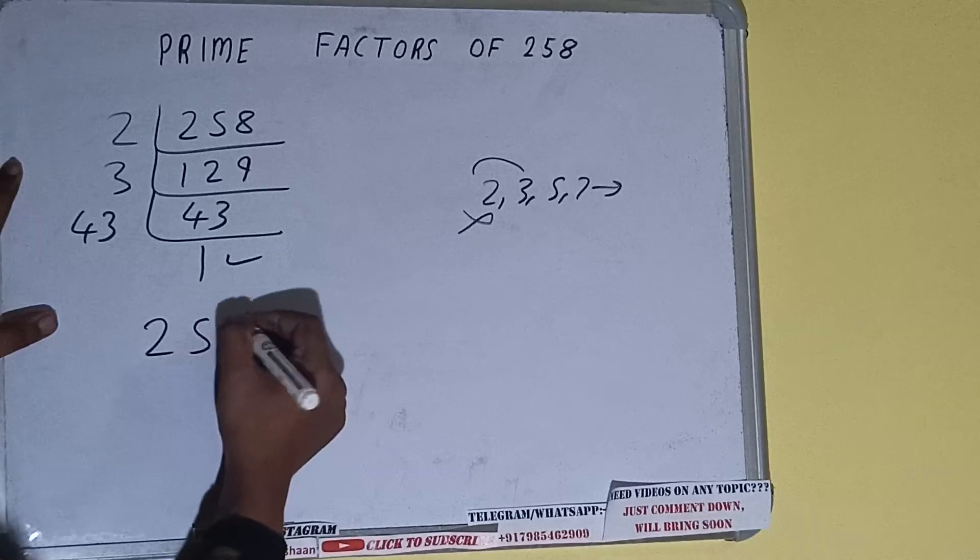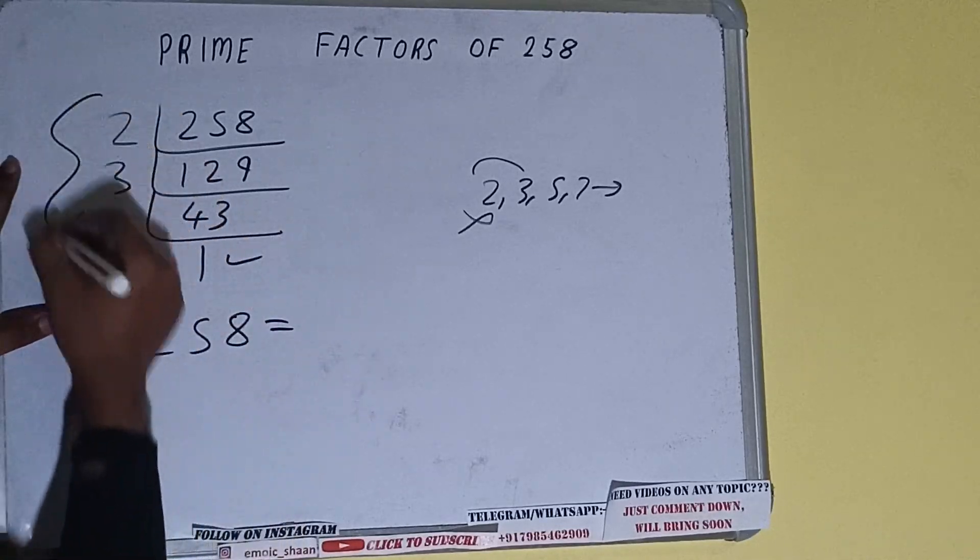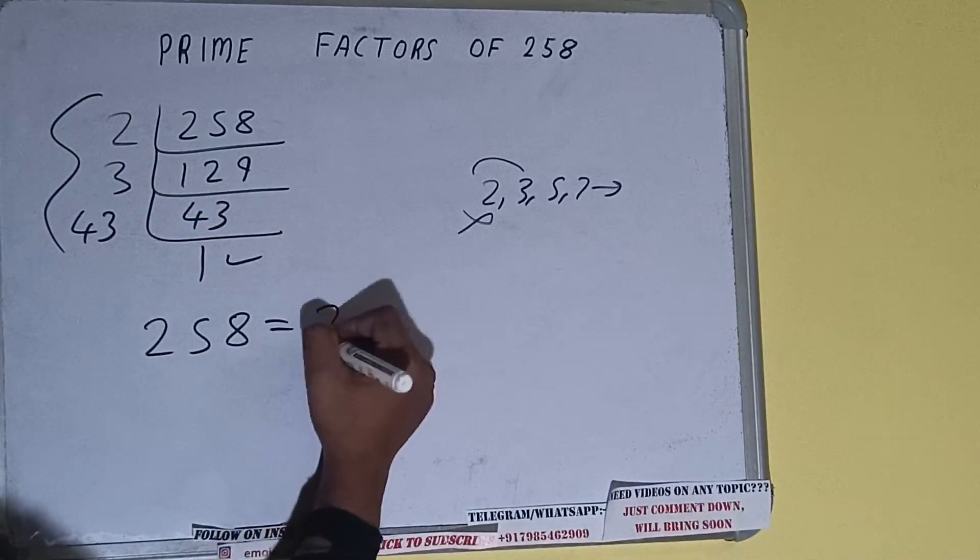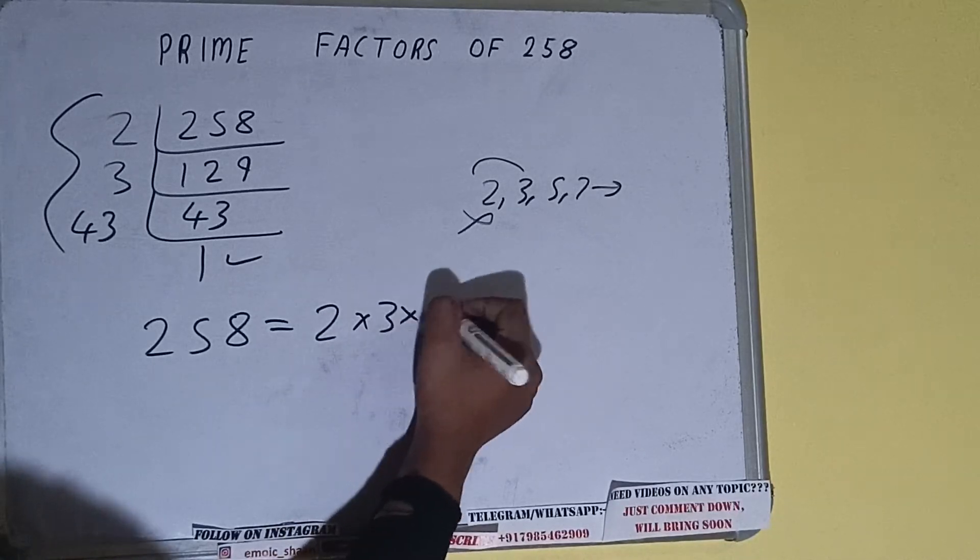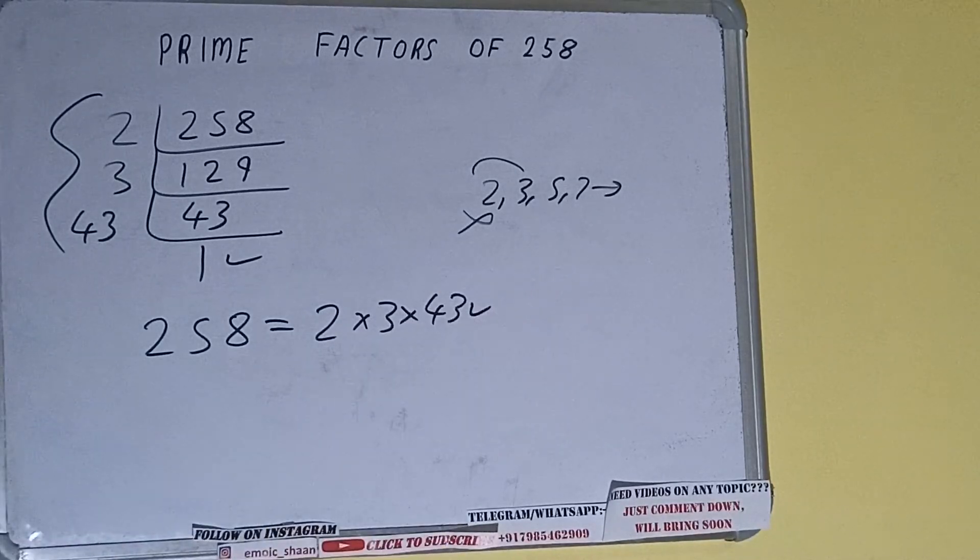That is, prime factors of 258 equals multiplying whatever we have on the left-hand side, that is 2 × 3 × 43. That will be the answer. So this is all about prime factors of 258.